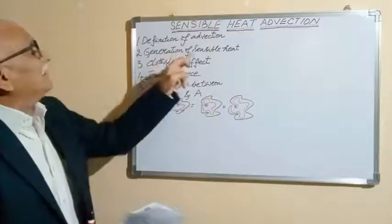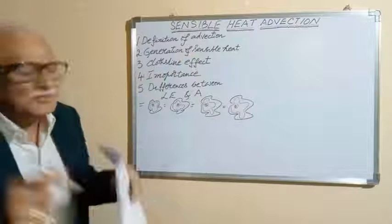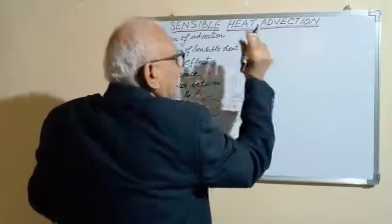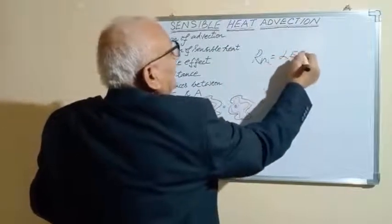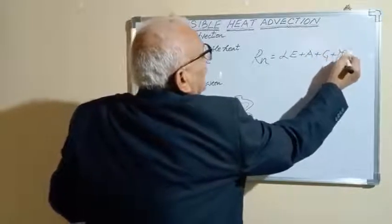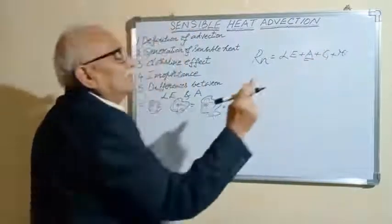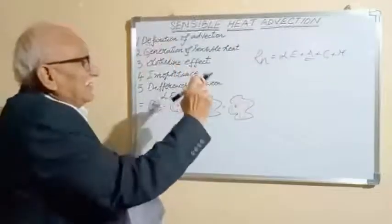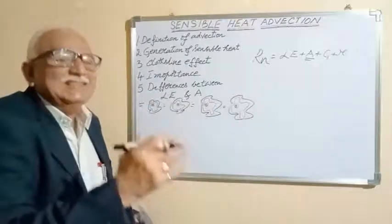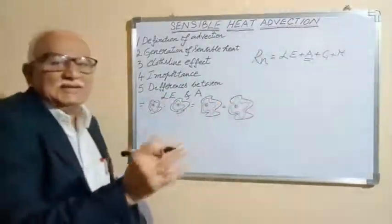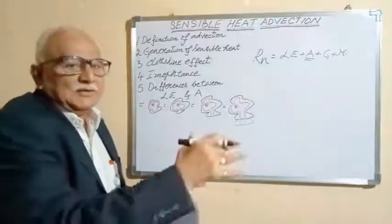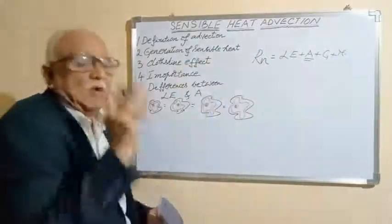What is the generation of sensible heat? Net radiation is divided into latent heat flux plus sensible heat flux, ground heat flux, plus miscellaneous energy. Sensible heat is the energy which is utilized in heating the air. Latent heat is the energy utilized in evapotranspiration. Ground heat is the energy that is stored in the ground. Miscellaneous energy is the energy stored in the crop plant.